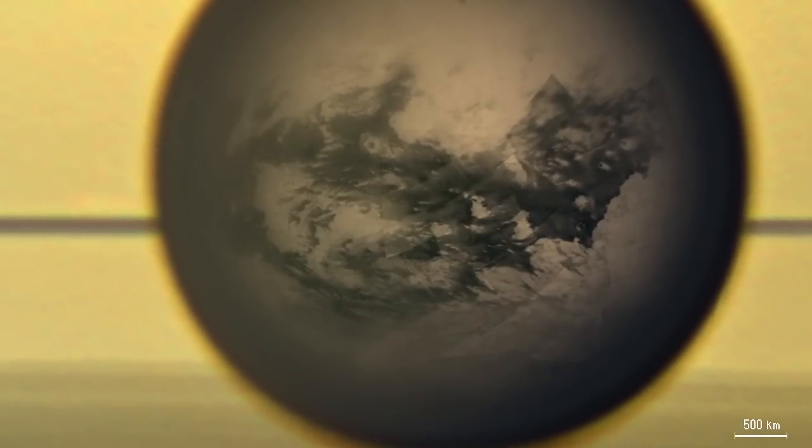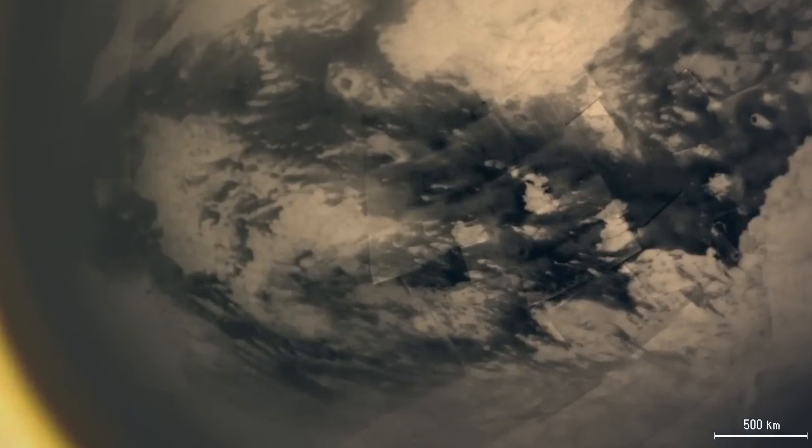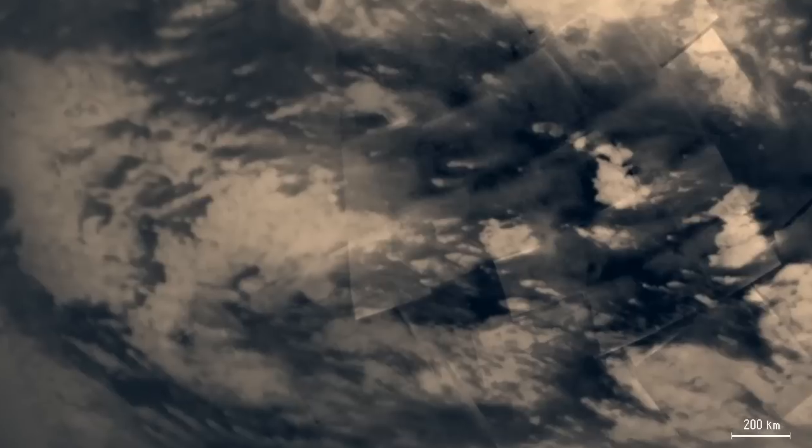Features on Titan's surface appear. The dark regions along Titan's equator are mostly dune fields. The brighter regions are highlands a few hundred meters high.